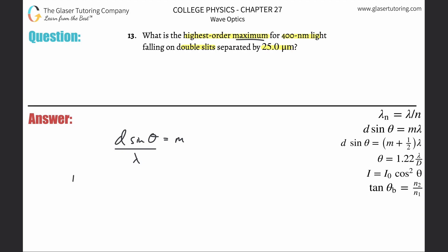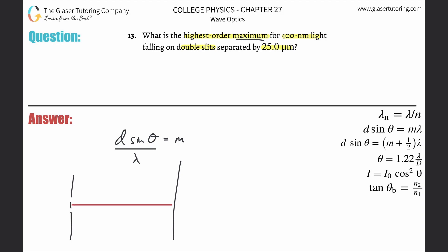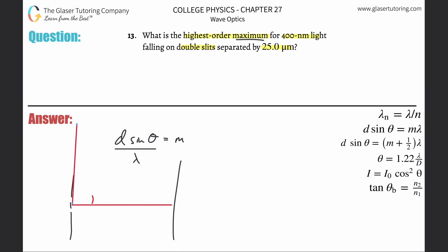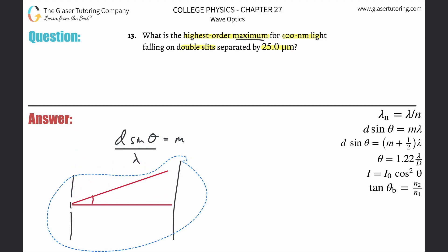When you have a double slit experiment, it kind of looks something like this — you have a little projector here, you've got some waves traveling through and they deflect on over. The angle here — the largest angle that can possibly be obtained as it comes out — basically the angle is right in here. The largest angle that can be obtained is 90 degrees.